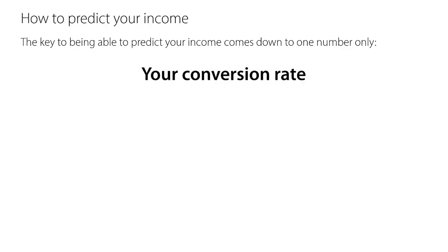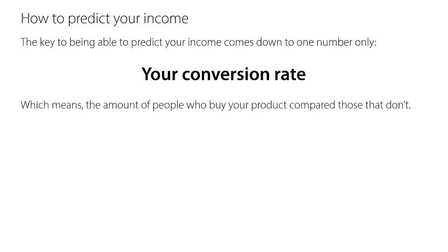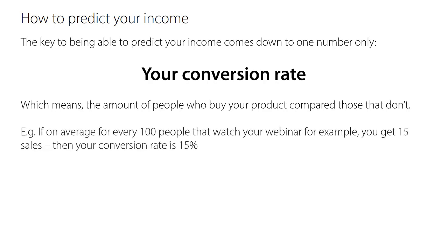It's your conversion rate. The conversion rate is key, and most people struggle with converting more people into customers, so the conversion rate is low. But even if you have a low conversion rate, it still allows you to predict your income. Let me show you how exciting it is once you know what your average conversion rate is. Your conversion rate is the amount of people who buy your product compared to those that don't. For instance, if on average for every 100 people that watch your webinar you get 15 sales, then your conversion rate is 15%.